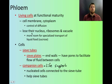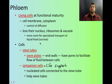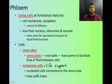The sieve tube cells don't have a nucleus, don't have ribosomes, and no vacuole. They're mainly specialized for carrying sucrose, glucose, or fructose — some of those different sugars.